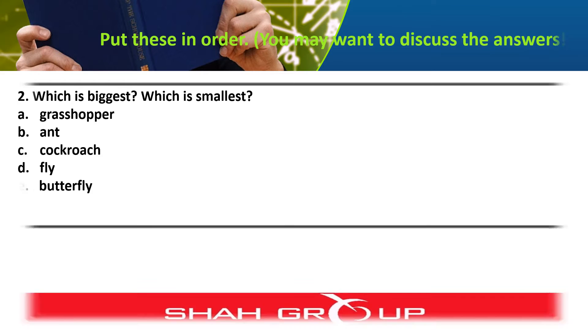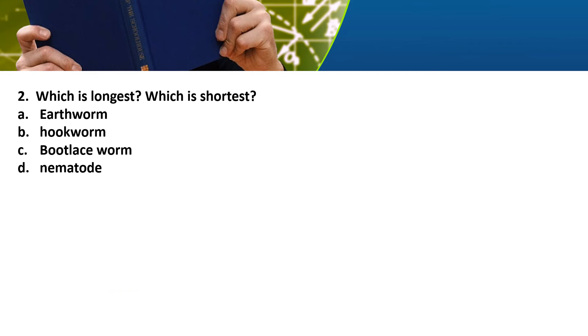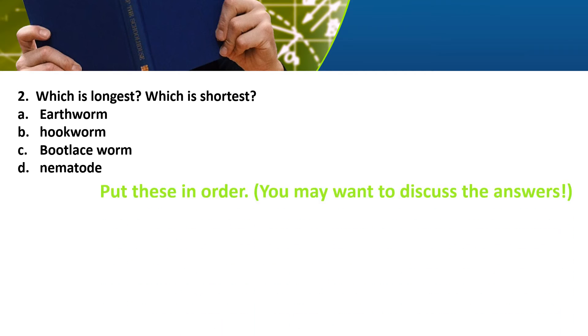What do we call it — which is the longest and which is the shortest? Order from shortest to longest among: bootless worm, nematode, bookworm, earthworm.